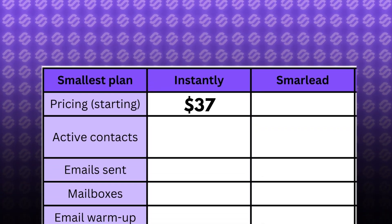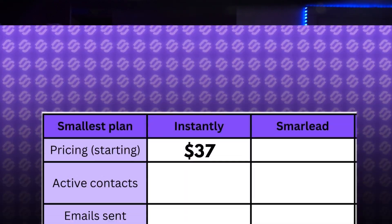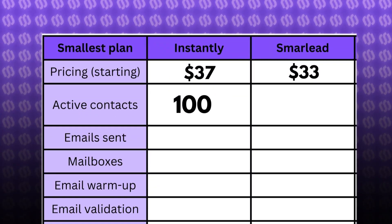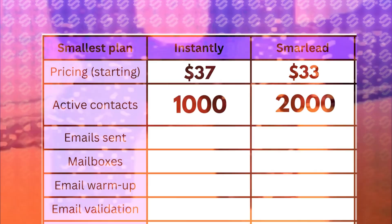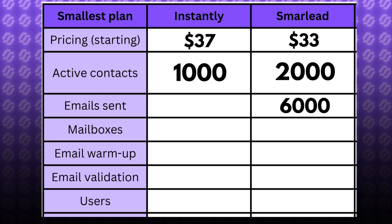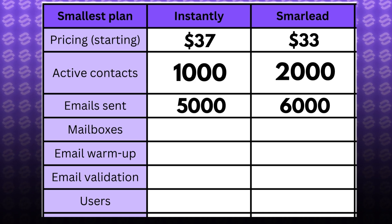Let's start with pricing. Instantly's lowest plan starts at $37 a month. This is $4 more than Smartlead, which has a plan starting at $33 a month. All the features I'm about to mention are for this lowest tier plan. For the smallest plan you get 1,000 active contacts on Instantly and 2,000 active contacts on Smartlead. Smartlead also allows you to send more emails monthly — 6,000 emails a month, whereas Instantly stops at 5,000 emails a month.